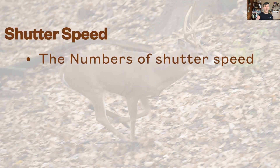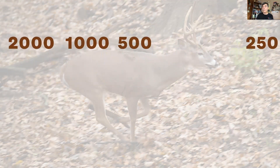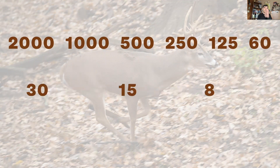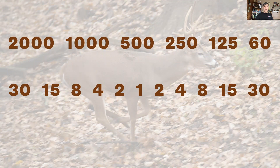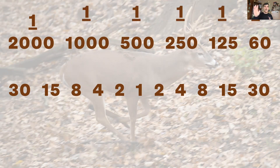And we have various numbers that represent shutter speeds. We start with 2,000 going down to 60, and then we go all the way to 30. Now, all these numbers are fractions — fractions of a second. So 2,000 means one two-thousandth of a second. You guys thought you were in some sort of art class, but we're doing math. Math is everywhere, and it's here in photography.